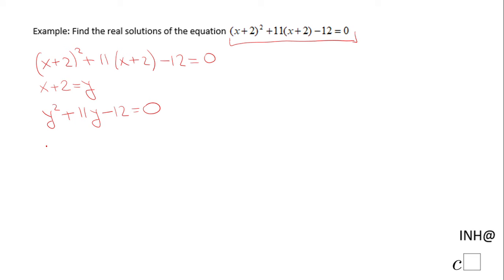Here we're looking for two numbers whose product is -12 and whose sum is 11. That will be 12 and -1. The factor form here will be y + 12 times y - 1 = 0.